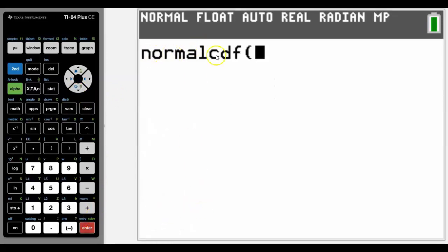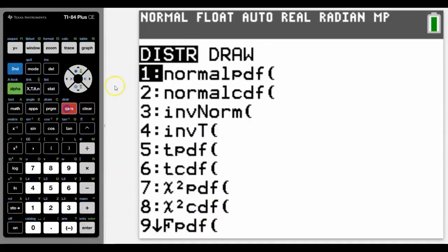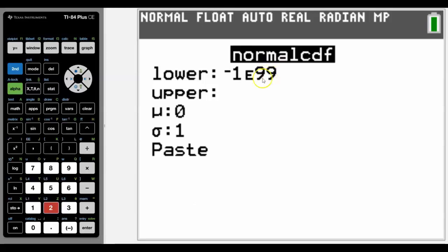Now if it takes you straight to the normal character screen like this, it means that you haven't got the updated OS. But most of the time when you go into distribution and you go to normal CDF, it will take you to this screen. This is going to give you everything from negative infinity.